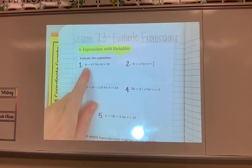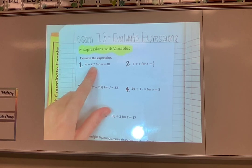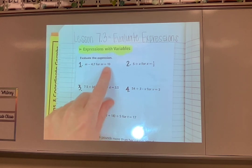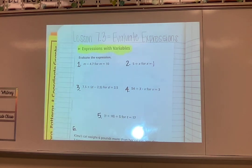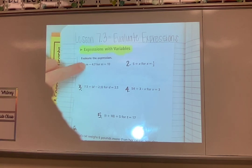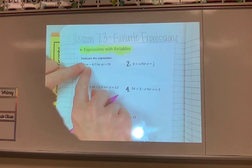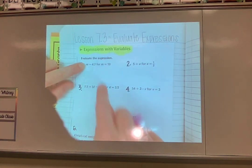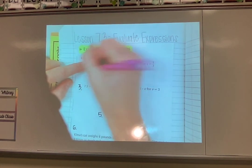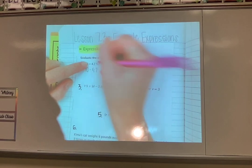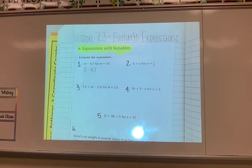Number one says m minus 4.7, and they want us to evaluate that for m equals 10. So we are going to pretend that m is a 10, and we're going to solve and see what our answer would be. So first I'm going to start copying down the problem. When I see my letter, I'm going to replace it with the number. I'm going to substitute this one in. So 10, and then copy down the rest of the problem, minus 4.7. There's only one thing to do there, 10 minus 4.7.